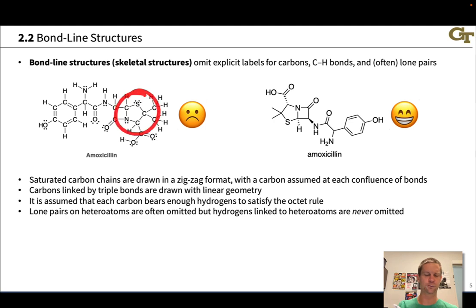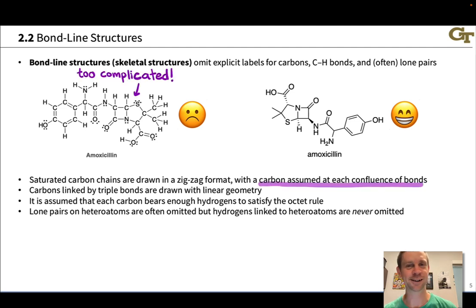Even representing rings with a condensed formula gets rather tricky. And if we look at the full-blown Lewis structure here, there's tons of visual complexity, tons of lines, tons of dots, tons of letters. This is way too complicated to draw any useful information out of it in anything resembling an efficient amount of time. It's just too complicated.